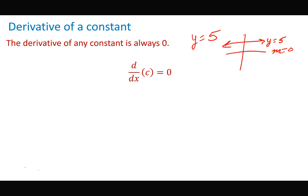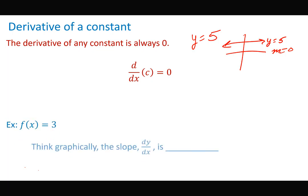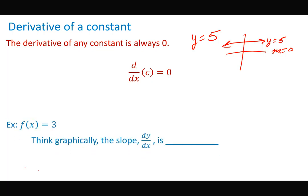A lot of these are pretty straightforward. The last couple take a little more, but really it's not that bad. So if I were to do the derivative of 3 graphically, the slope dy/dx is going to be zero, because this would just be a line y equals 3.